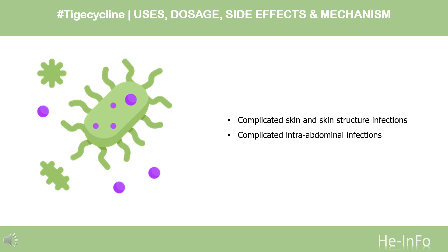Complicated intra-abdominal infections caused by Citrobacter freundii, Enterobacter cloacae, Escherichia coli, Klebsiella oxytoca, Klebsiella pneumoniae, Enterococcus faecalis (vancomycin-susceptible isolates only), Staphylococcus aureus (methicillin-susceptible isolates only),